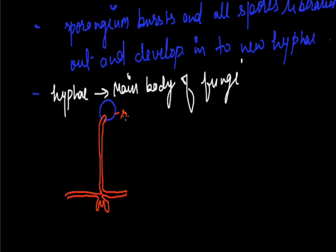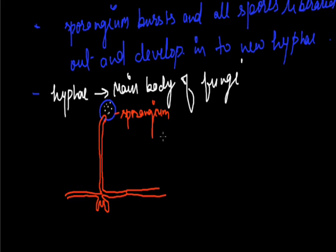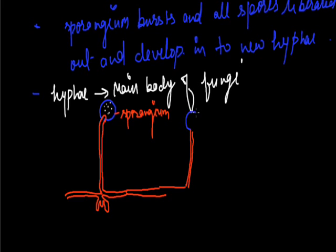This structure is called the sporangium. By the process of spore formation, many spores are formed inside the sporangium. In favourable conditions, the sporangium bursts and all spores are liberated out and develop into new hyphae of fungi.